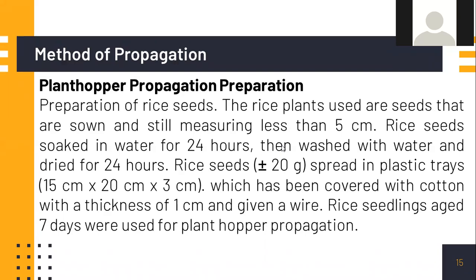For plant hopper propagation, rice seed preparation involves using seeds that are sown and still measuring less than five centimeters. Rice seeds are soaked in water for 24 hours, then washed and dried for 24 hours. The seeds are spread in plastic trays covered with cotton of one centimeter thickness and fitted with wire. Rice seedlings of seven to eight days old were used for plant hopper propagation.